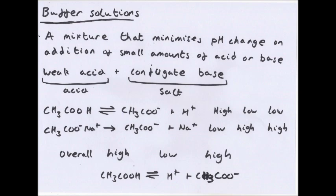Buffer solutions minimise pH change on addition of small amounts of acid or base. You prepare one by combining a weak acid and its conjugate base in the form of a salt. For example, CH₃COOH partially dissociates in solution giving a high concentration of ethanoic acid and low concentrations of H+ and CH₃COO⁻. The salt CH₃COONa fully dissociates to give CH₃COO⁻ and Na+. Together you have: high [CH₃COOH], low [H+], and high [CH₃COO⁻].